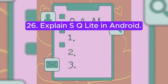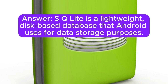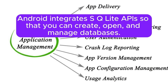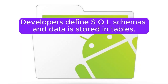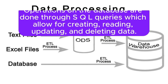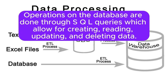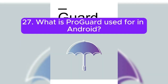Question 26: Explain SQLite in Android. SQLite is a lightweight, disk-based database that Android uses for data storage. Android integrates SQLite APIs so you can create, open, and manage databases. Developers define SQL schemas and data is stored in tables. Operations on the database are done through SQL queries, which allow for creating, reading, updating, and deleting data.